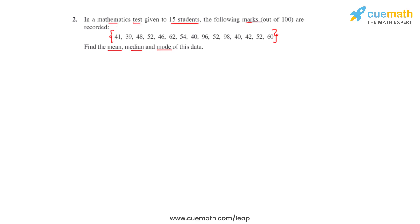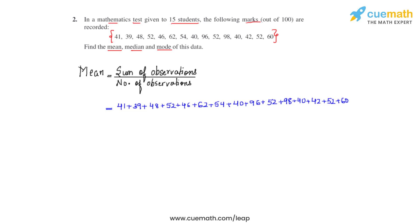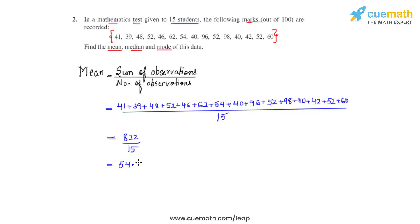We will start by finding the mean, for which the formula is sum of observations divided by the number of observations. To get the sum of observations we add the marks of all 15 students and divide it by 15. On addition we get the sum as 822, which is to be divided by 15. On division we get the answer as 54.8, which is the mean of the given data.